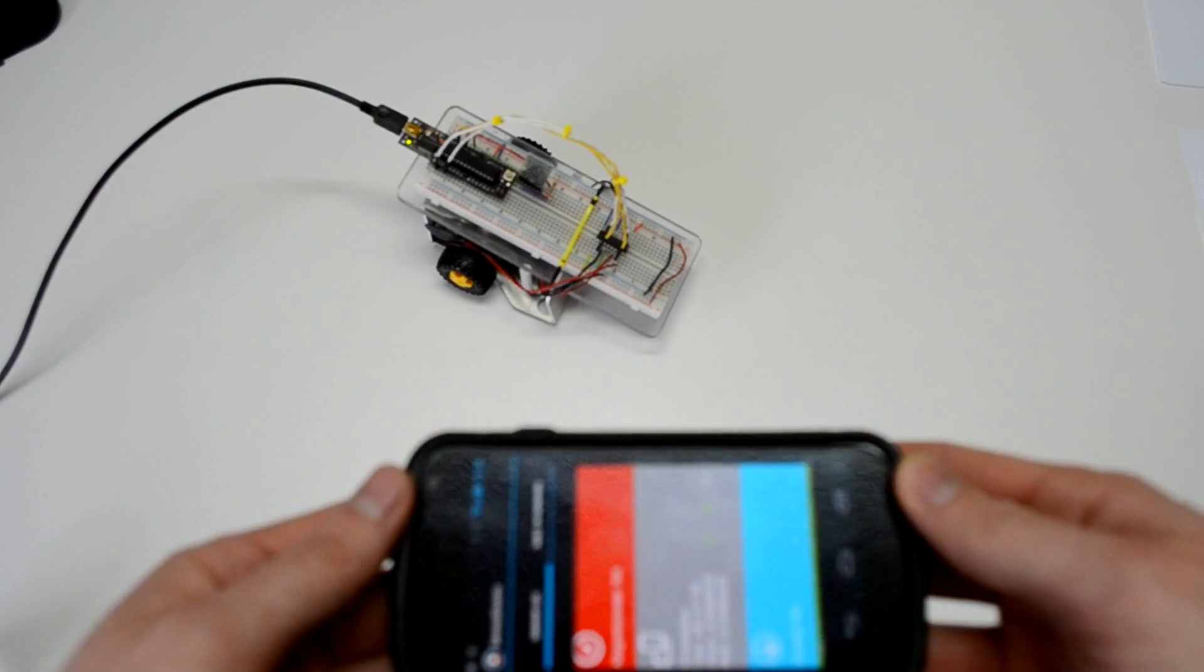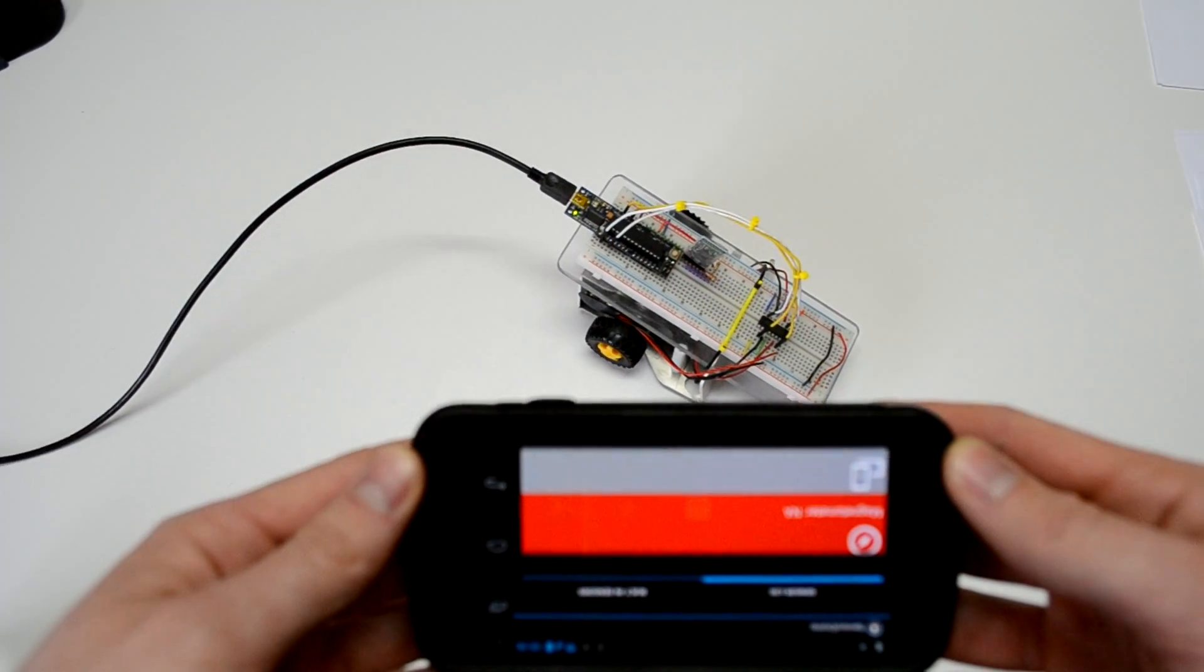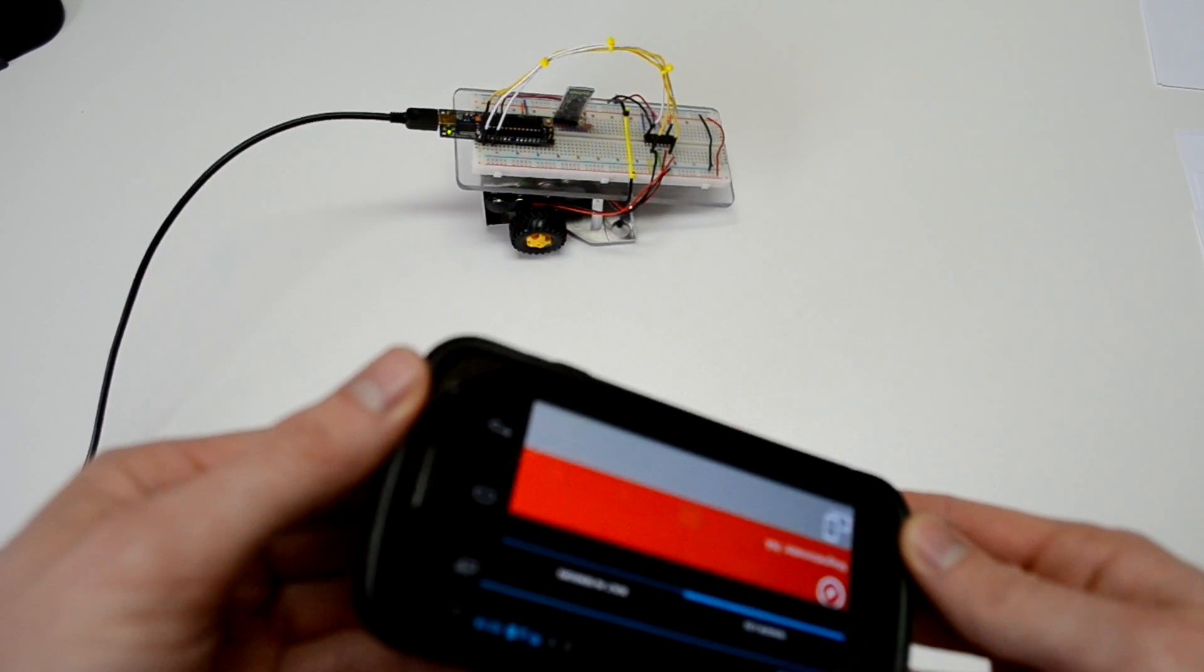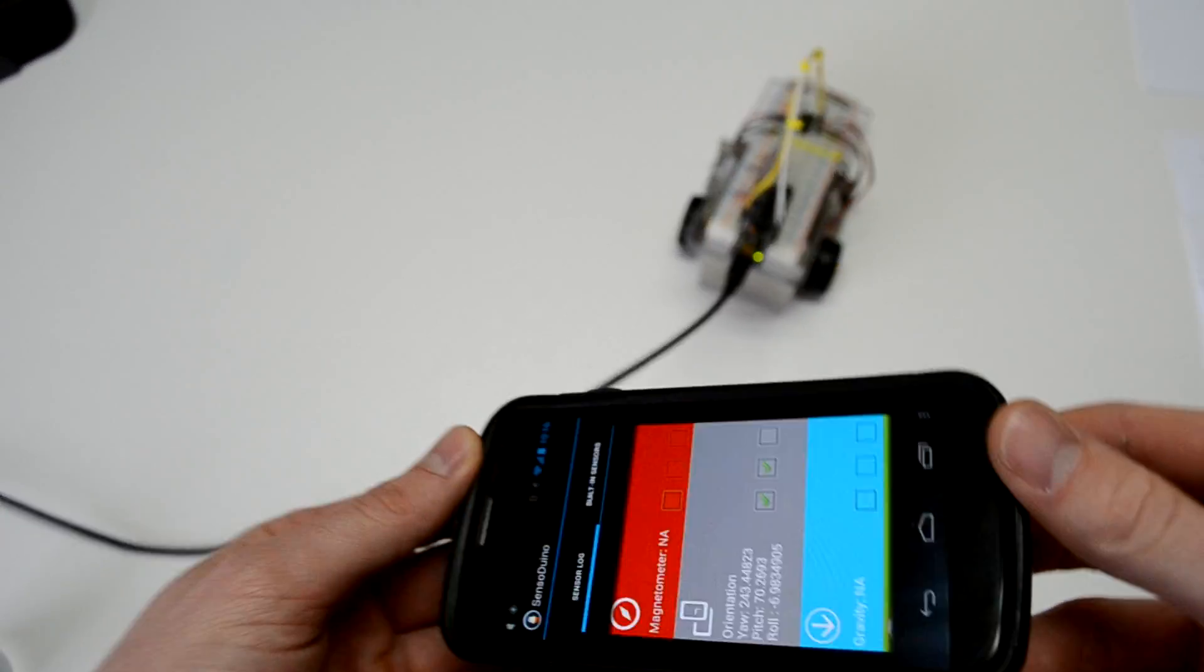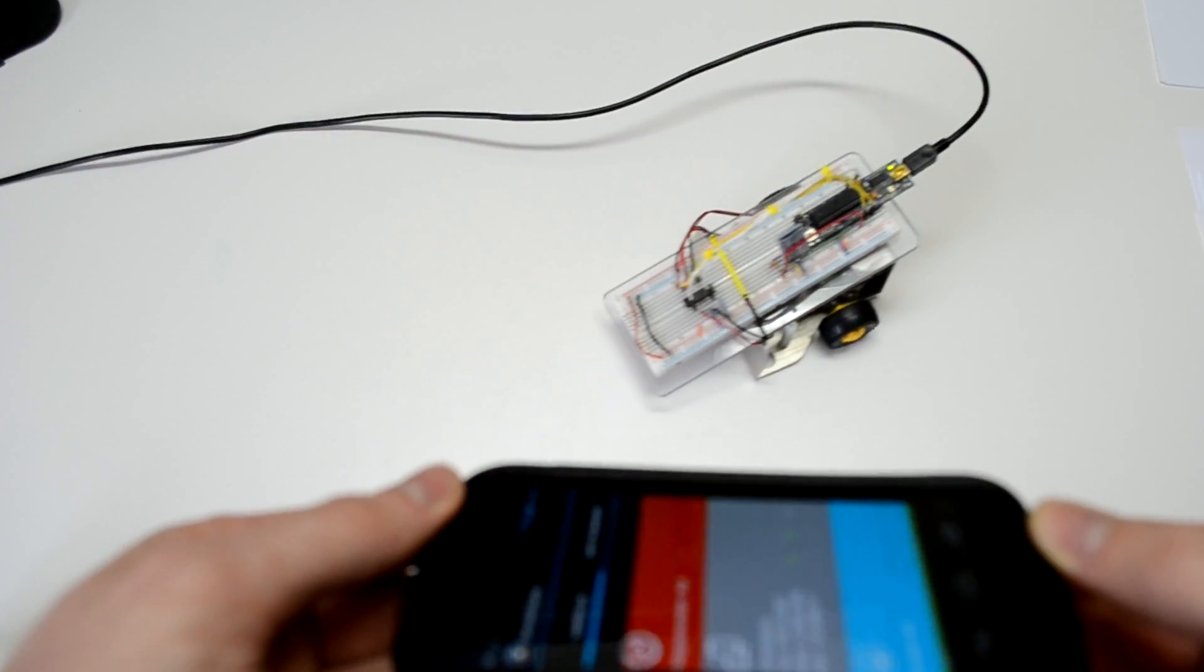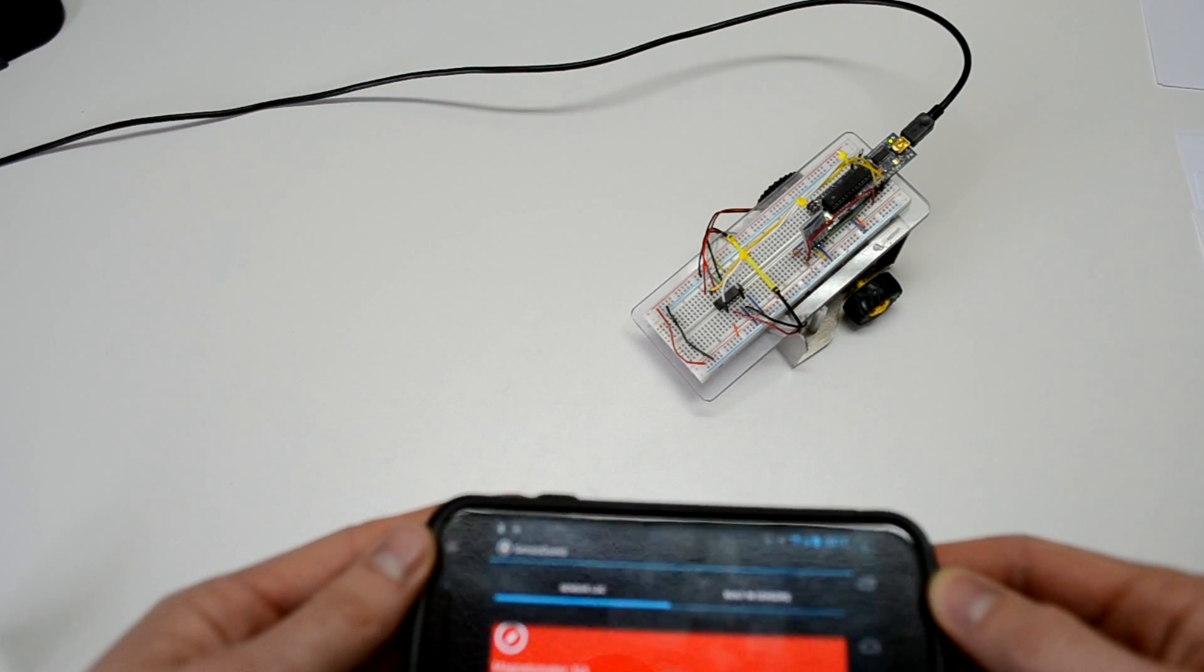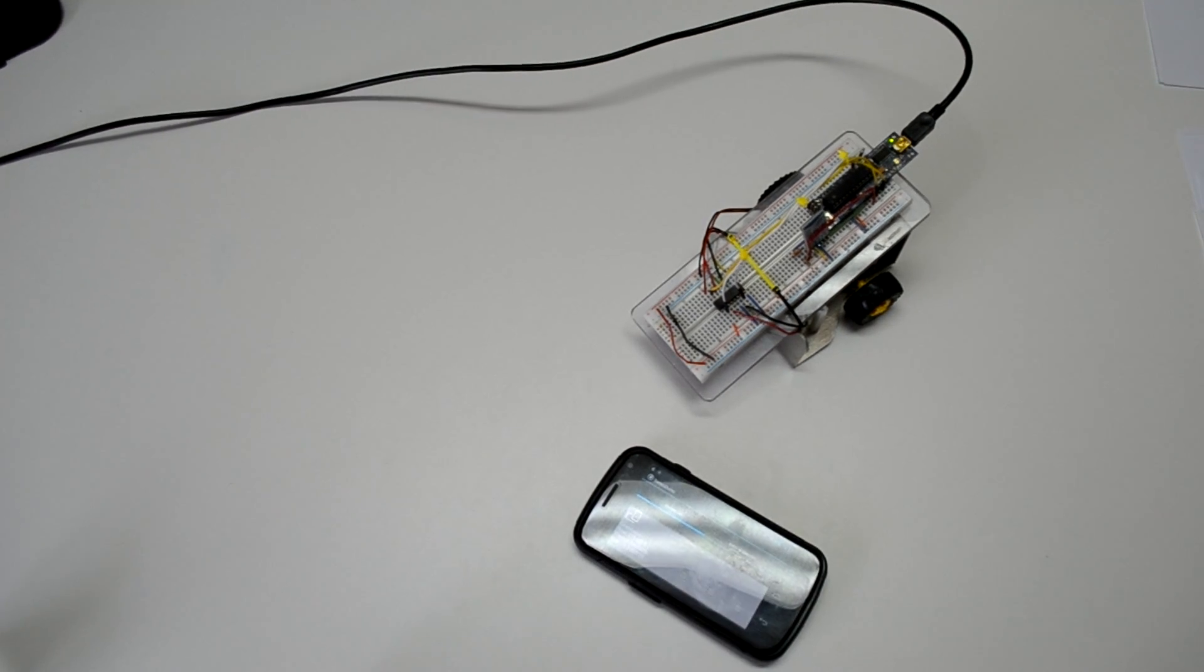So now we are sending the data. And as I move the phone forward, the robot will go forward. As I go backwards, the robot will go backwards. As I move to the left or to the right, it will drive in that direction. If I move all the way to the left, it only goes to the left. If I move all the way to the right, it only goes to the right. As you can see, it works pretty well. There you have it folks.